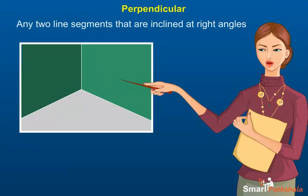Observe the corner of a room. There are three lines that meet each other at that point. All the three lines are perpendicular to each other.